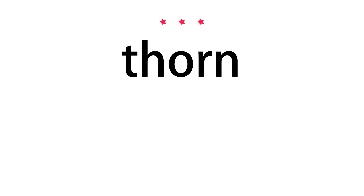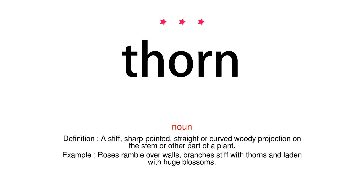Thorn. Noun. Definition: A stiff, sharp-pointed, straight or curved woody projection on the stem or other part of a plant.